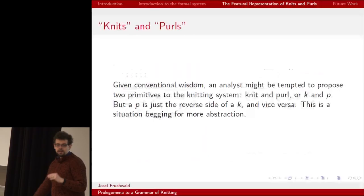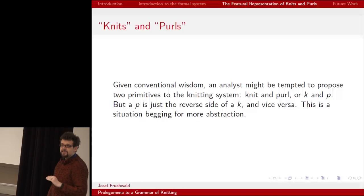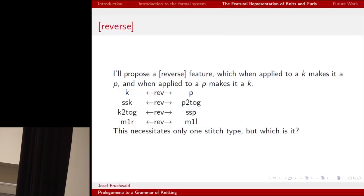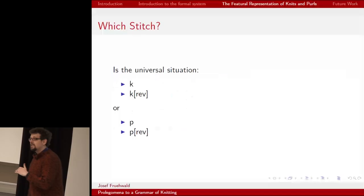So most knitting systems include two primitives, K and P, for knit and purl. But this is obviously a system begging for more abstraction. And I'll give it to you. So I'm proposing a reverse feature, which when applied to a knit will give you a purl, and when applied to a purl will give you a knit. And here's some evidence, actually, that this reverse feature may apply more broadly than if you just knit some purls. For example, purl two together is just the reverse of slip slip knit. So with this system, I only need one stitch and the reverse feature.